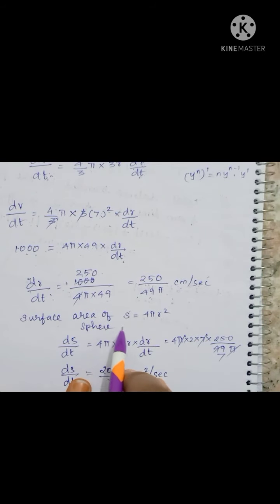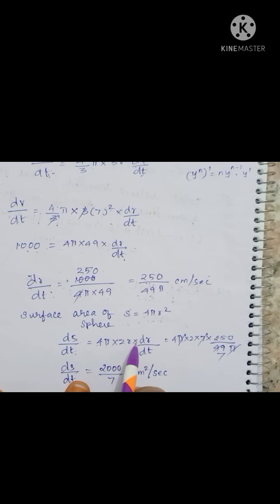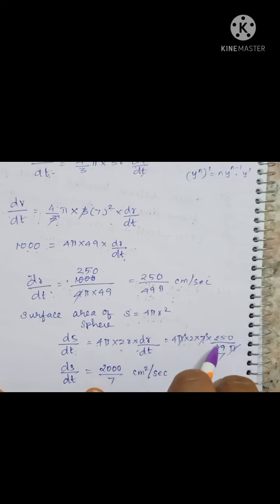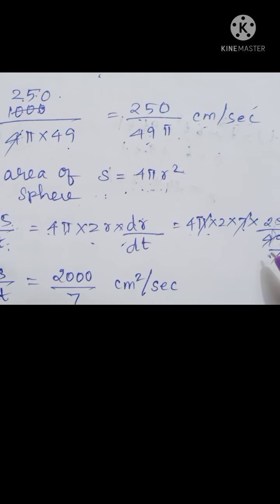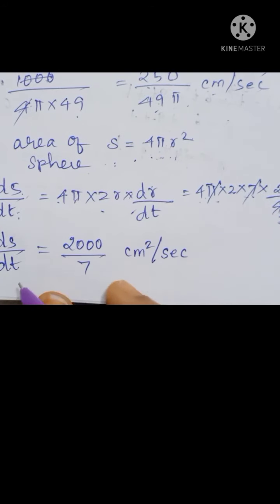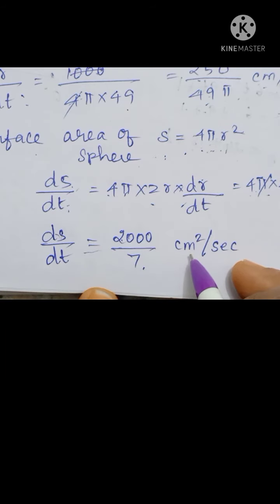Next, surface area of sphere: S = 4πr². So ds/dt is the rate of change of surface area. ds/dt = 4π · 2r · dr/dt. Substituting r = 7 and dr/dt = 250/(49π): ds/dt = 4π · 2 · 7 · 250/(49π). The π cancels: 4 · 2 · 7 · 250/49. Simplifying 7 and 49: 49/7 = 7, and 4 · 2 · 25 · 8 = 2000/7. So ds/dt = 2000/7 cm² per second. This is the book answer.